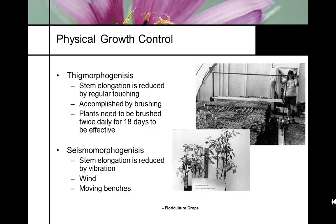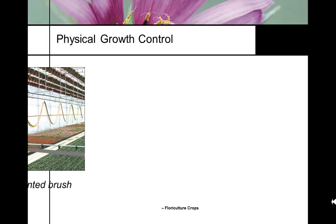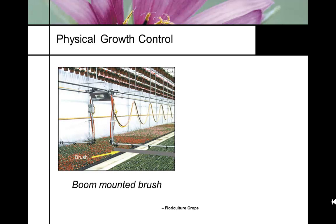Thigmomorphogenesis is especially useful for organic growers not wanting to use plant growth regulators, particularly for crops like tomatoes. It primarily affects internode elongation — the biomass is not changing; the stems are shorter but the plants have the same biomass, with thicker stems and more pronounced leaves. Dr. Latimer's paper is available for supplemental reading.